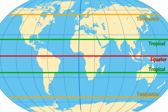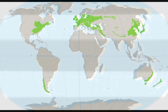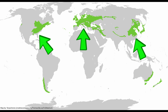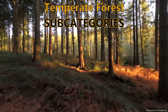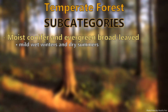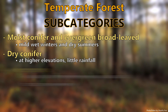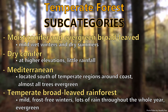Temperate forests grow in the next latitude rings above and below the tropical forest zone and can therefore be mainly found in North America, Northeastern Asia and Europe. There are four subcategories within temperate forests: the moist conifer and evergreen broadleaved, the dry conifer, the mediterranean and the temperate broadleaved rainforest.